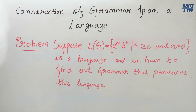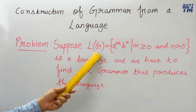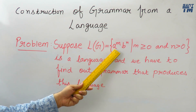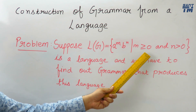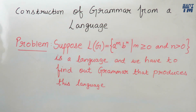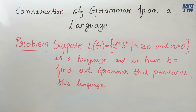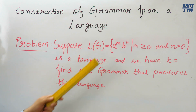For explanation of this topic, I have taken an example. The problem is: suppose the language generated by grammar G is given by a^m b^n, where m is greater than or equal to 0 and n is greater than 0. This is the formula to generate the language, and we have to find out the grammar G that produces this language.